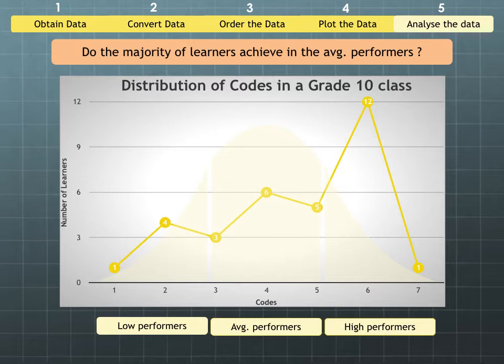I really challenge you in your grade meetings and your subject meetings to look at these distribution of codes and ask yourself why is it not looking like a normal distribution. There could be a very valid reason, but it's important to know what that reason is.